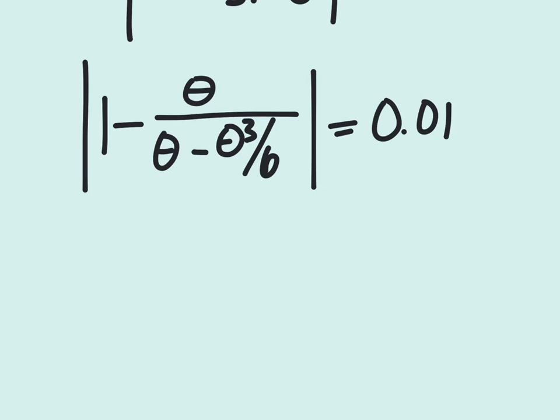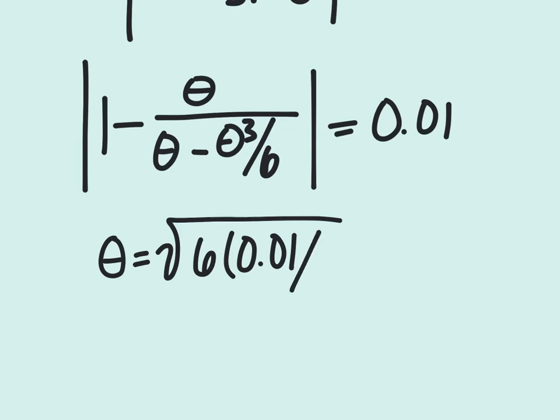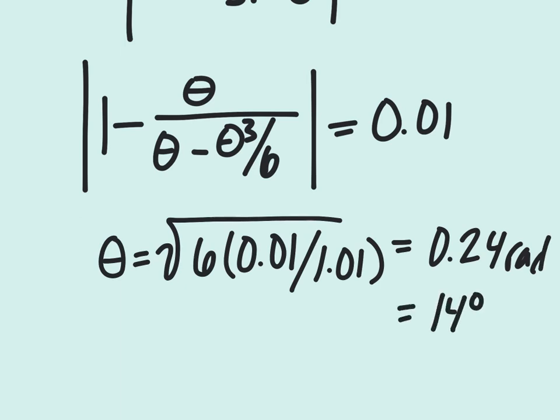And when we go ahead and solve for theta, we get theta equals the square root of 6 times 0.01 divided by 1.01. And that gives us an answer of 0.24 rads, which is equivalent to 14 degrees.